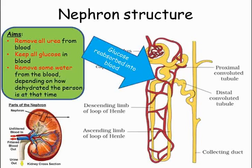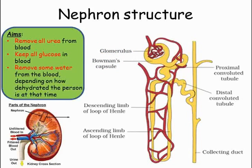Some water is also reabsorbed at this stage. To enable this to happen, the capillaries follow the nephron after they leave the glomerulus. The remaining liquid then passes through the loop of Henle, before going through another convoluted tubule.